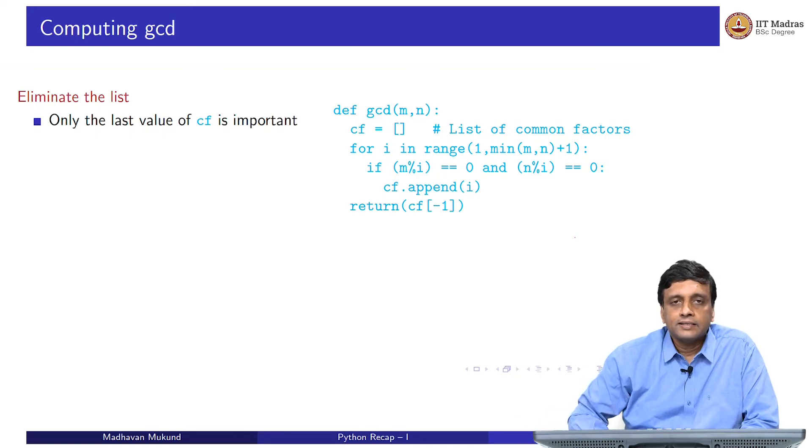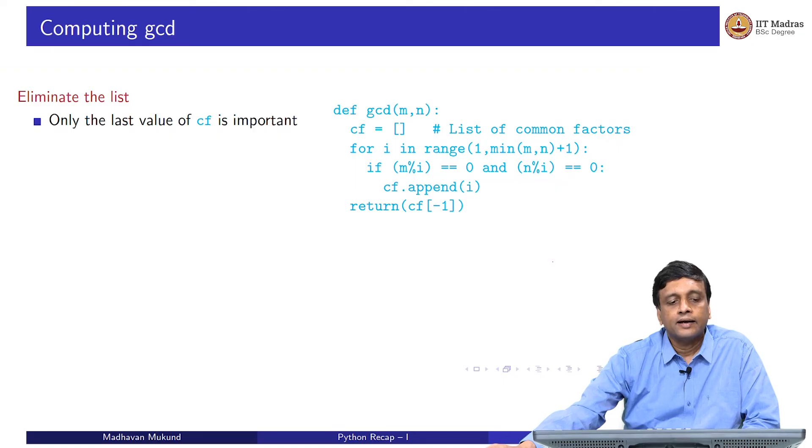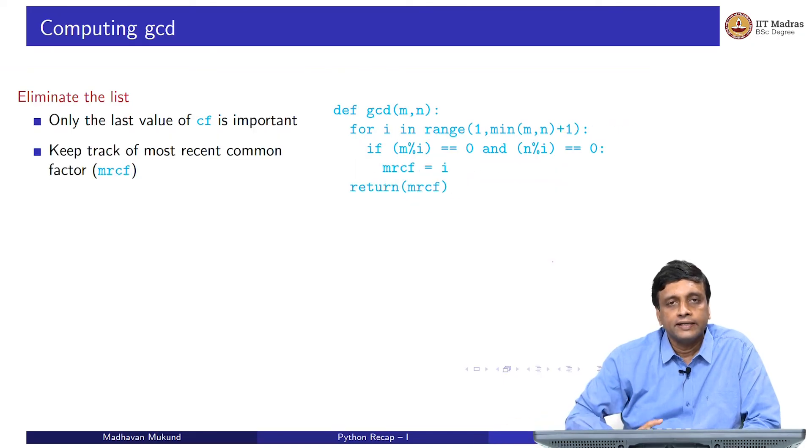One of the things we can realize is that we really do not need all the common factors. We are only looking for the largest common factor. In particular, we are only looking for the last element of this list that we are constructing. If you are only looking for the last element of the list that we are constructing, there is no point in remembering all the earlier items in the list. We can actually eliminate the list, and just keep track incrementally of the most recent common factor. Remember, we are computing common factors in ascending order starting with 1, 2, 3, 4. Every common factor we find will be the latest candidate we have for the greatest common divisor, because once we have found it, all the earlier ones are now superseded.